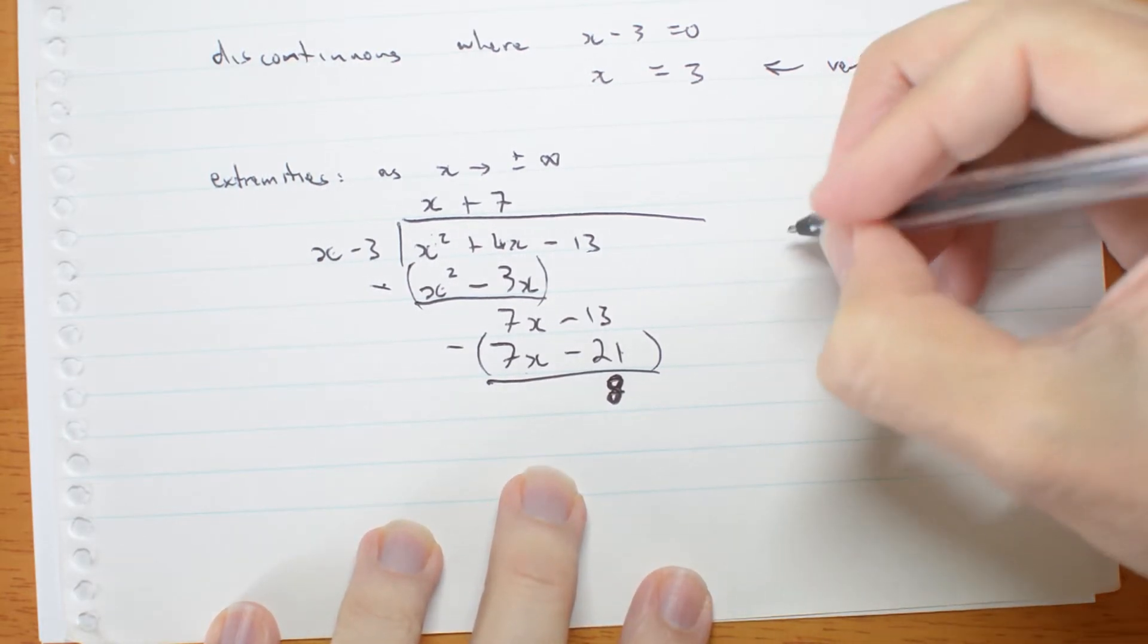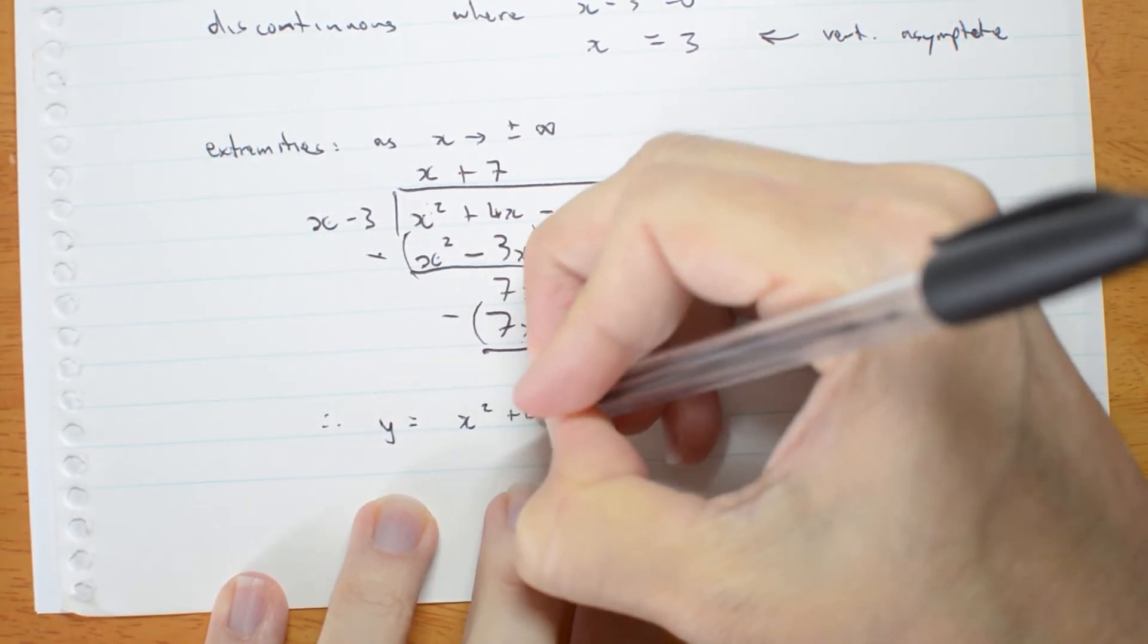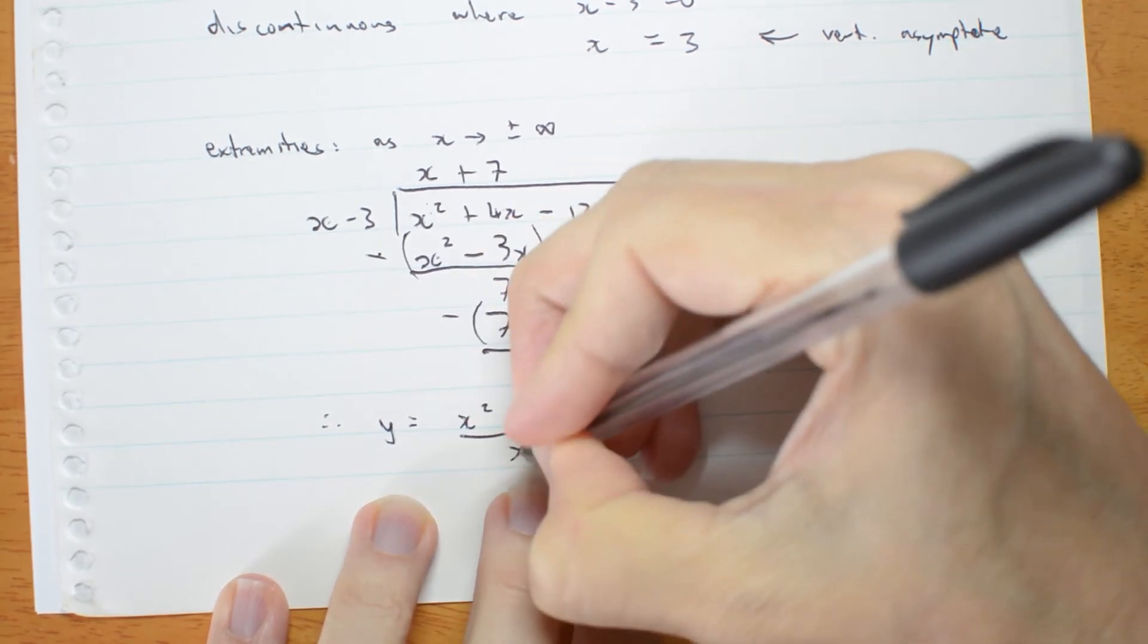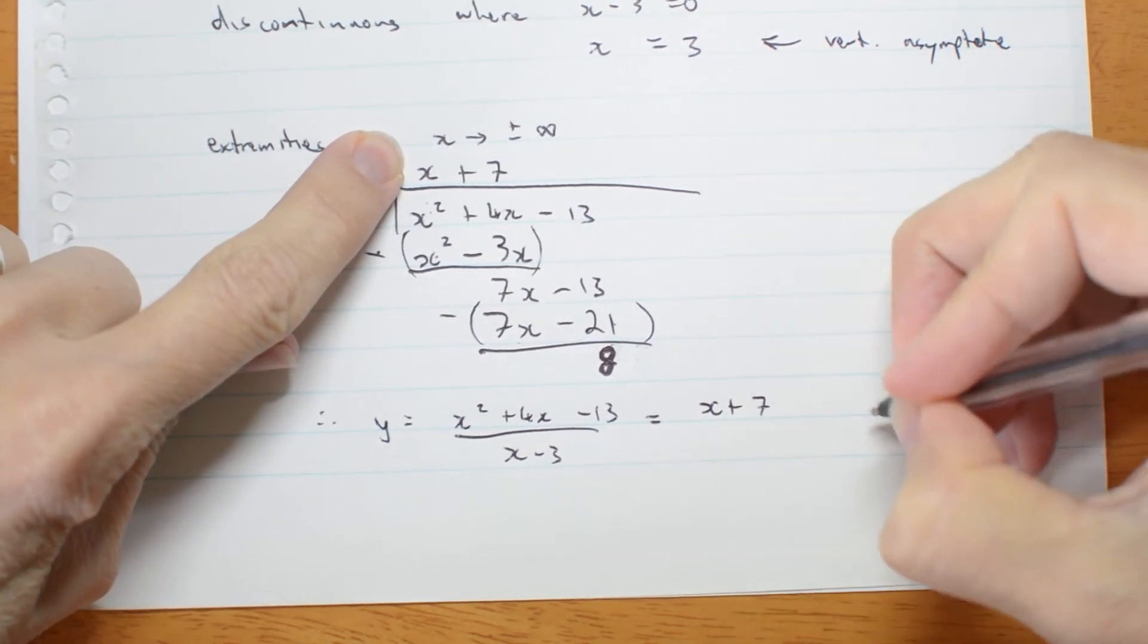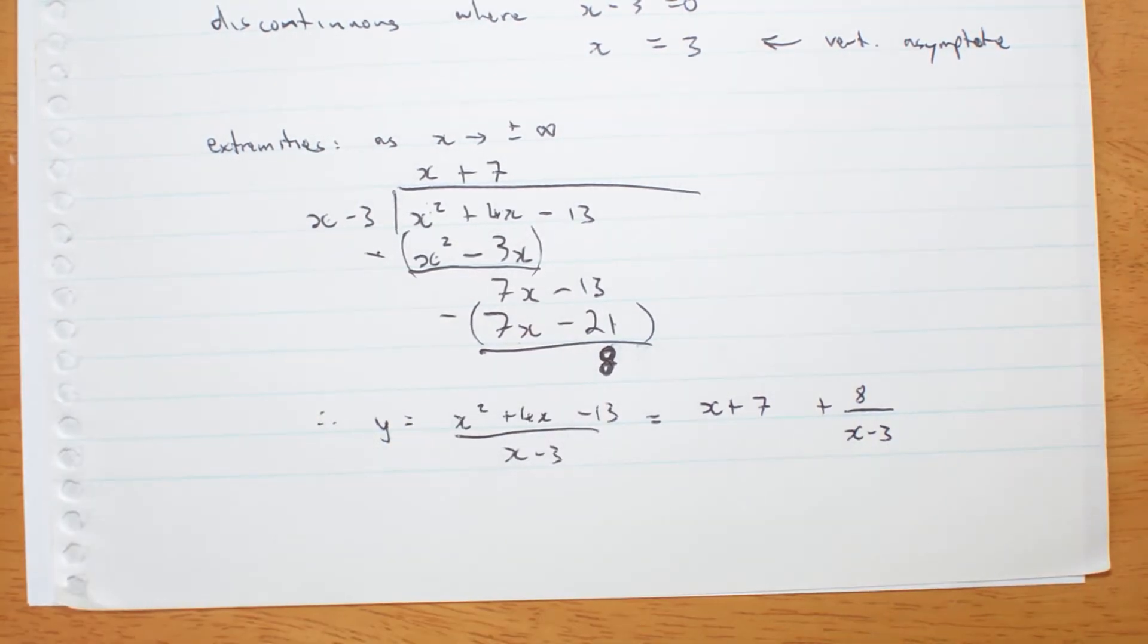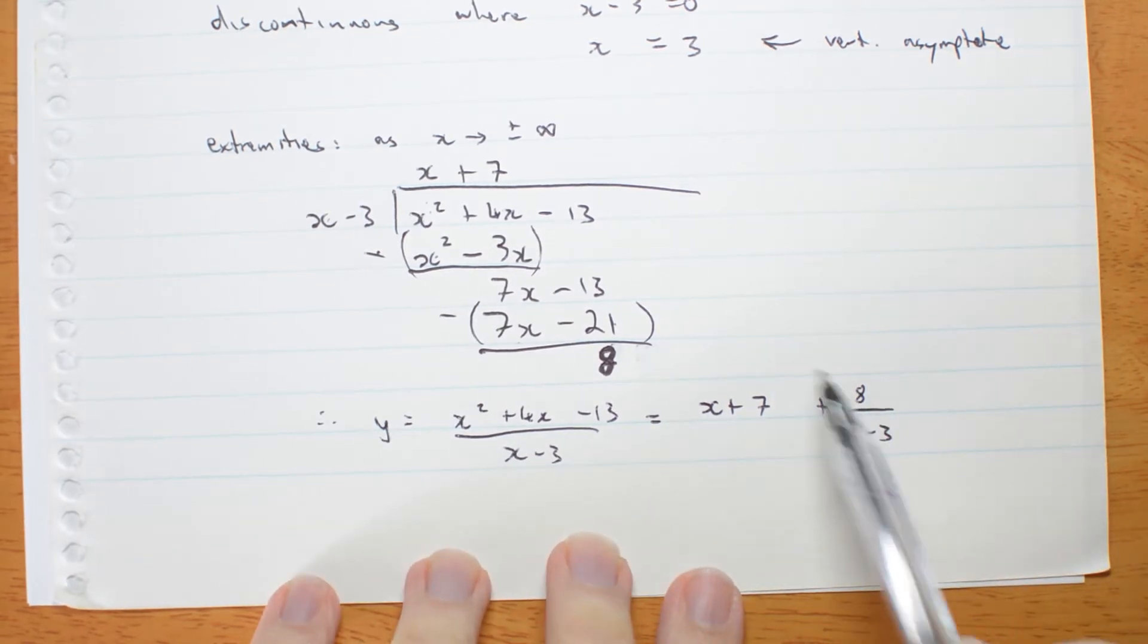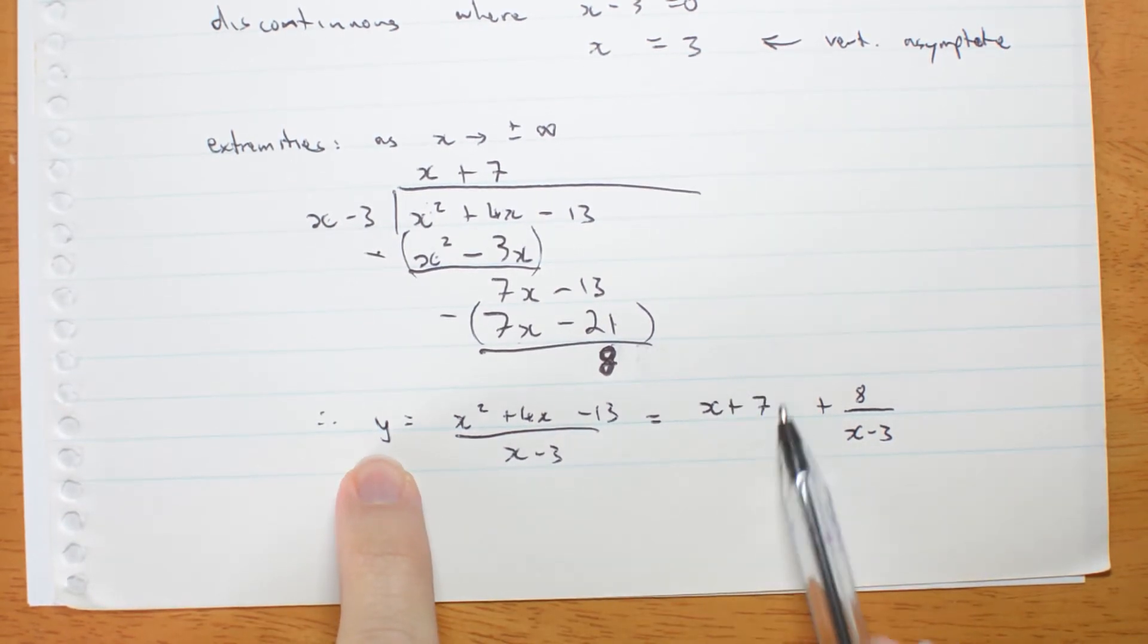So that means my y fraction, which was x squared plus 4x minus 13 over x minus 3, is the same as this quotient, x plus 7, and this remainder 8 over x minus 3. Now, the reason we give you all that practice writing it like this is because now as x gets very big, I'm going to have this and as x gets very big, this part is going to become basically 0. I'm adding something that's going to get closer and closer and closer to 0. So this is my asymptote.